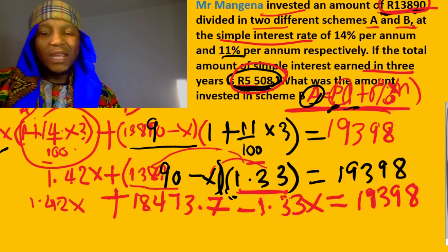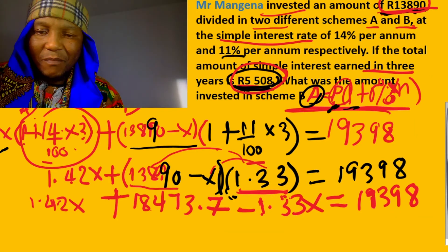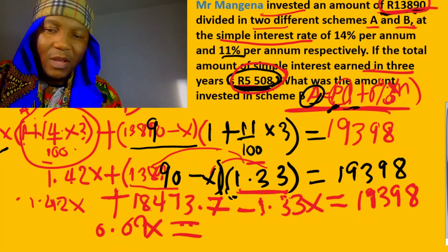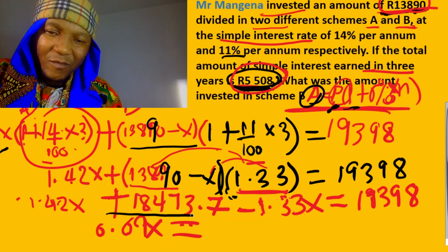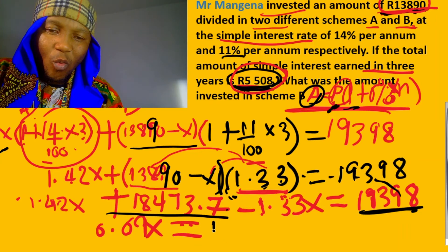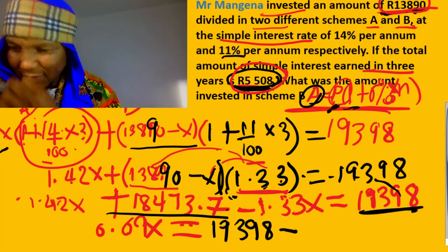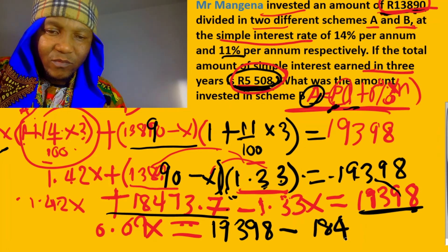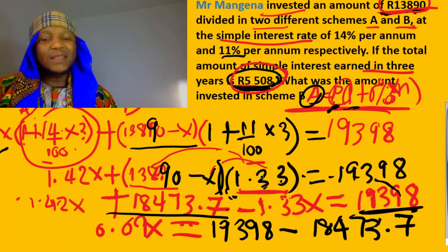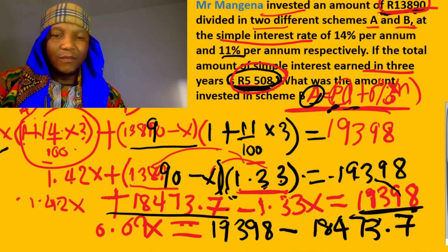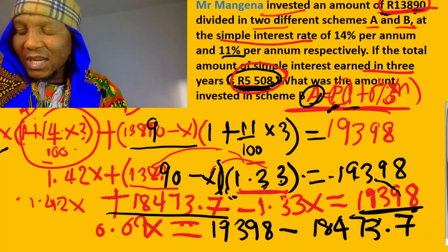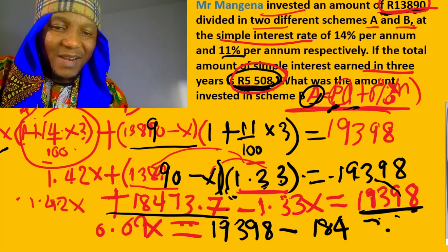Collecting like terms: 1.42x minus 1.33x gives us 0.09x. Then on the right side, 19,398 minus 18,473.7. Plugging into the calculator quickly gives us 924.3. So we have 0.09x equals 924.3.